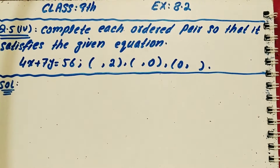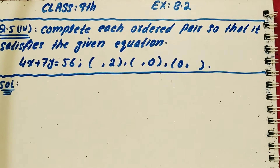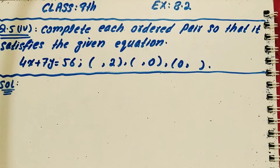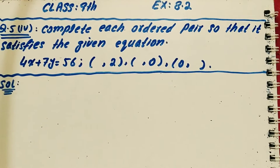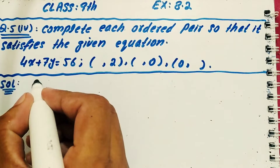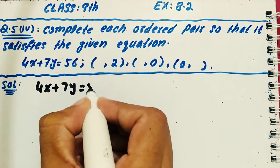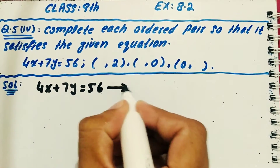Bismillahirrahmanirrahim, Assalamu Alaikum. Aaj hum Class 9th Exercise 8.2 mein Question No. 5 Part 4 karenge. Question hai: complete each ordered pair so that it satisfies the given equation. Equation hamare paas given hai: 4x + 7y = 56. Teen ordered pairs given hain. Pehle mein x ki value find karni hai, y = 2 given hai. Doosre mein x find karenge, y = 0 hai. Teesre mein y find karenge jabke x = 0 hai. Is equation ko main equation no. 1 ka naam deta hoon.